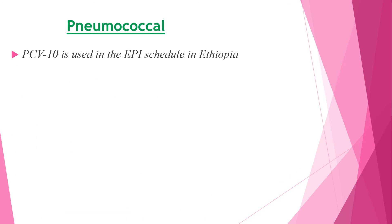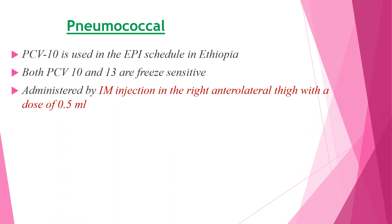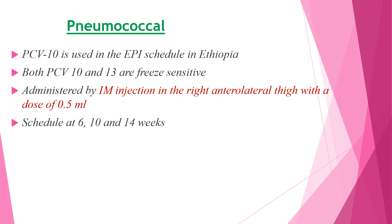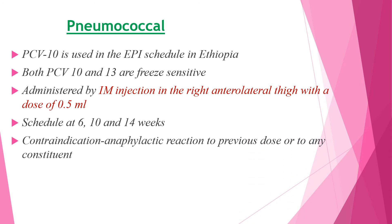The other vaccine is pneumococcal vaccine. PCV10 is used in the EPI schedule. Both PCV10 and PCV13 are freeze-sensitive. They are administered by IM injection in the right anterolateral thigh with a dose of 0.5 ml and given at 6, 10, and 14 weeks for infants. Contraindication includes anaphylactic reaction to a previous dose or to any component of the vaccine. Mild reactions are injection site reactions and fever, which are more common.